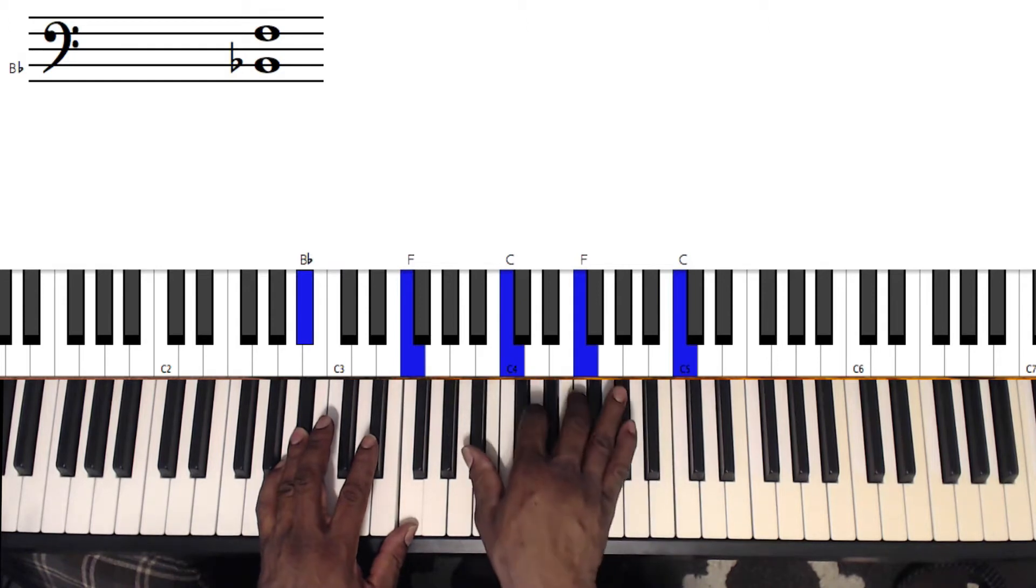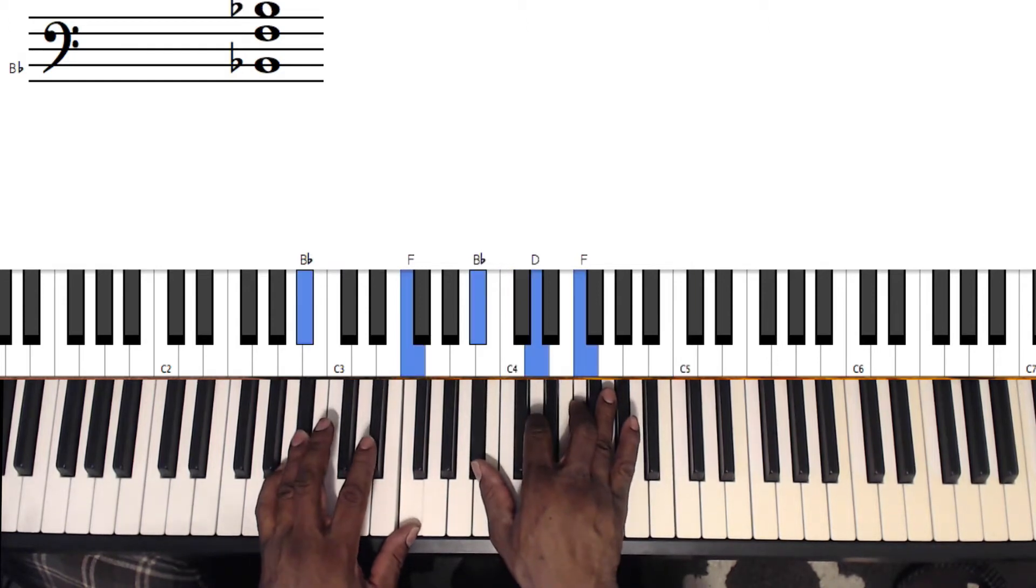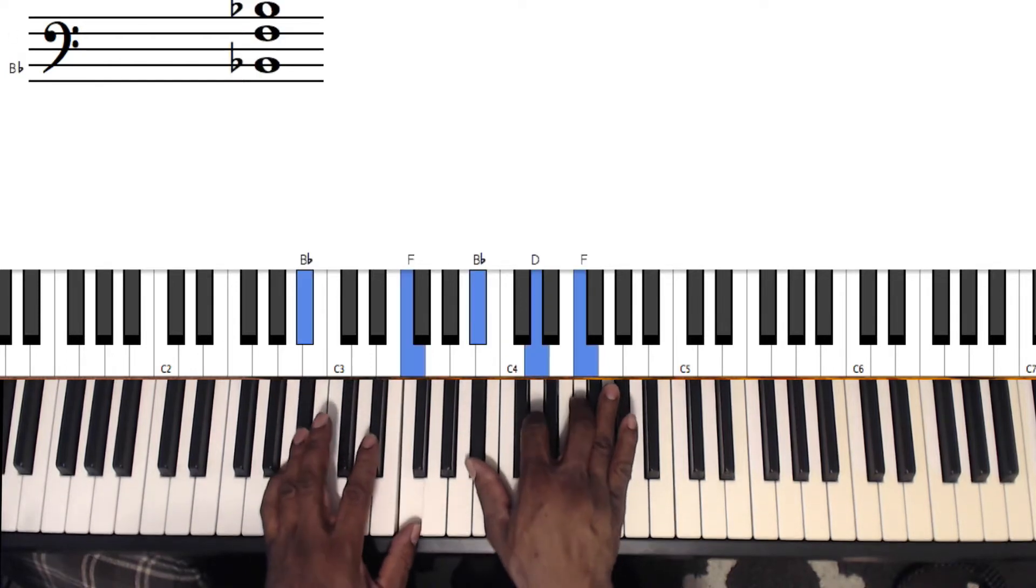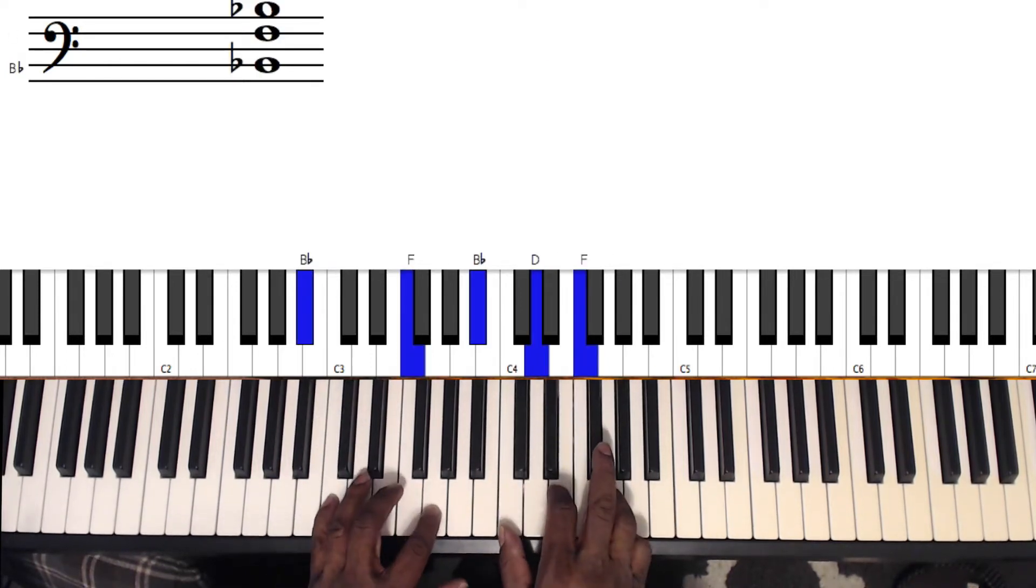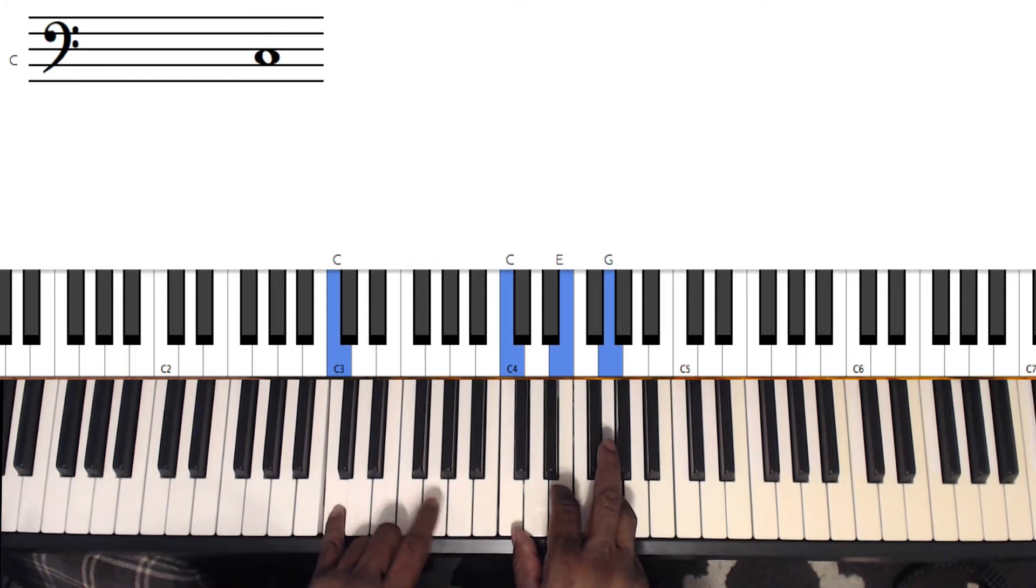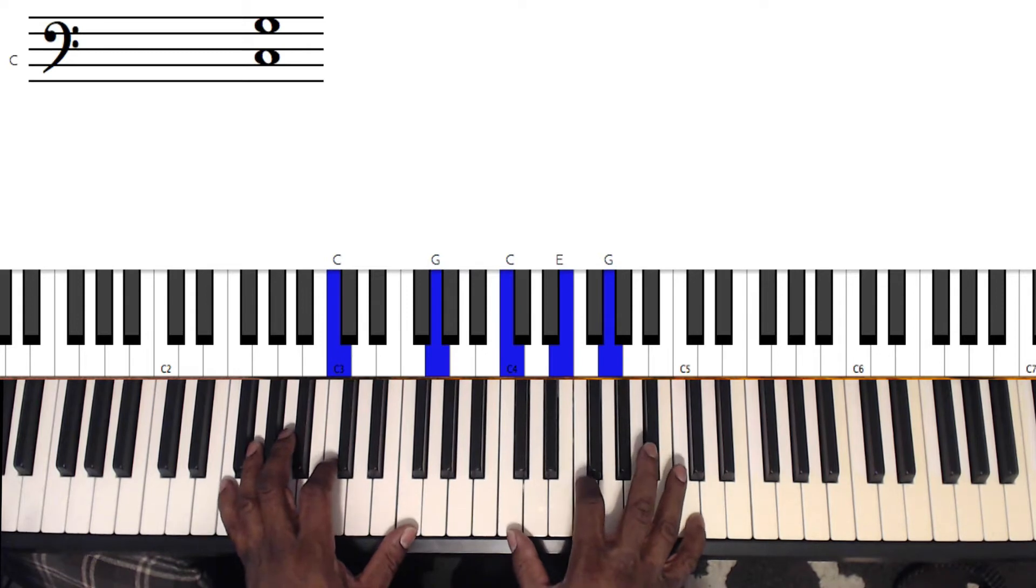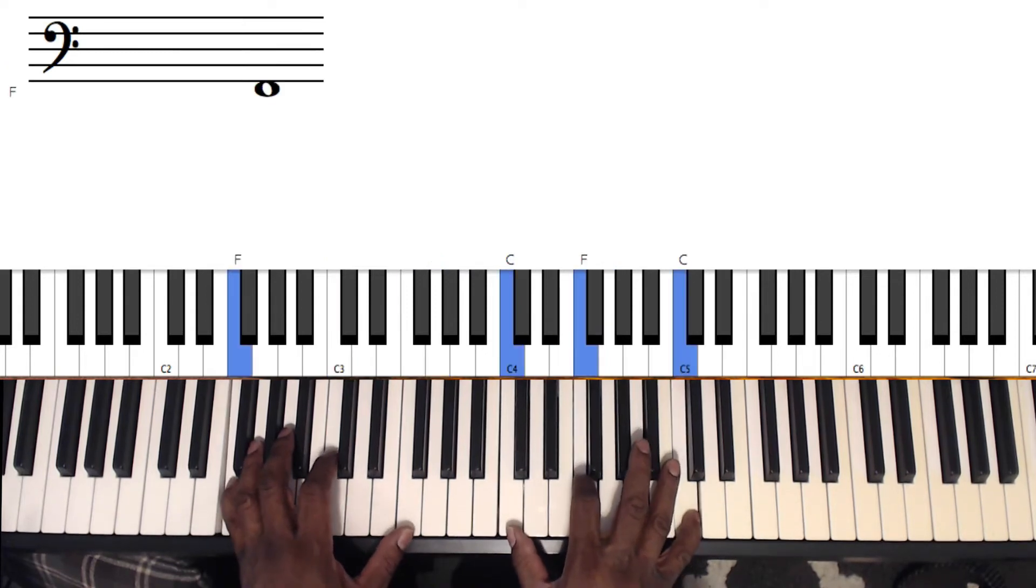And then come down to this chord. Same bass. It's going to be Bb, F, Bb, D, and F. And then you're going to lead back into the verse again using that chord. Then go to this chord which is a C, G, C, E, and G. Back to the first chord and we're going to repeat the same thing.